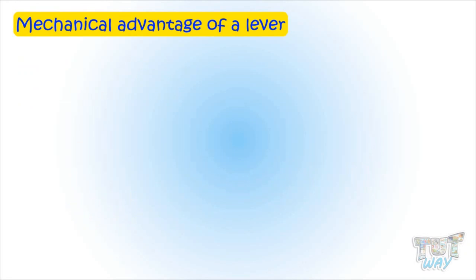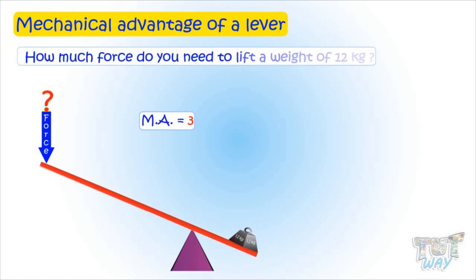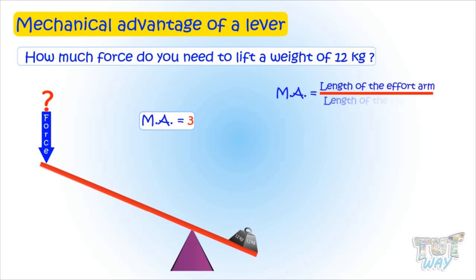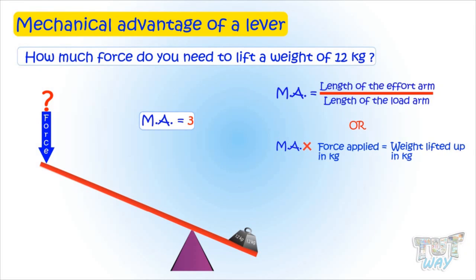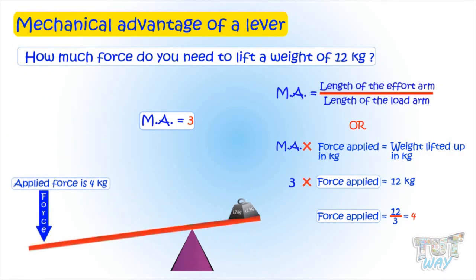Let's find it the other way. In this case, we are given that the mechanical advantage of this lever is 3, and we have to find out how much force in kg is required to lift a weight of 12 kg. We know that mechanical advantage multiplied by the force applied in kg equals the weight lifted in kg. So, 3 multiplied by force applied equals 12 kg, meaning the force applied is 12 divided by 3, that is 4 kg. So we need 4 kg of force to lift a weight of 12 kg.